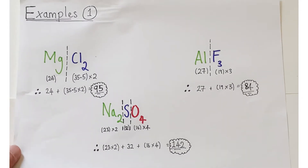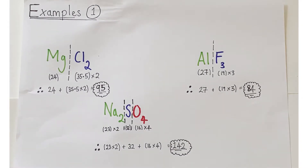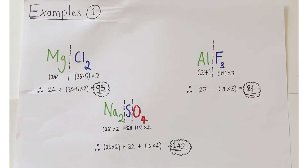You'll be presented with a formula for a particular compound or molecule. Here are three examples of ionic compounds, so these would all be relative formula masses. You need to look out for different elements, which I've divided up with dashed lines. Subscript numbers are the key important factors because they affect the number of atoms of a particular element present.